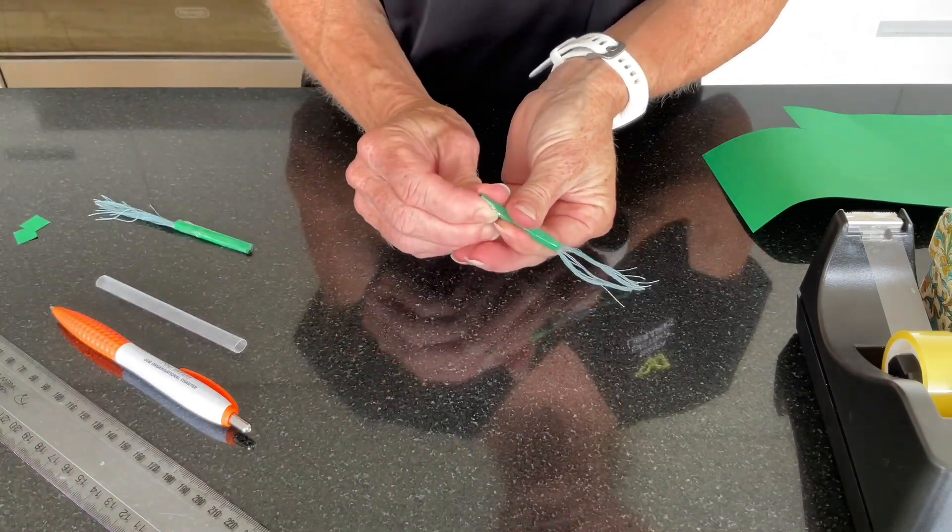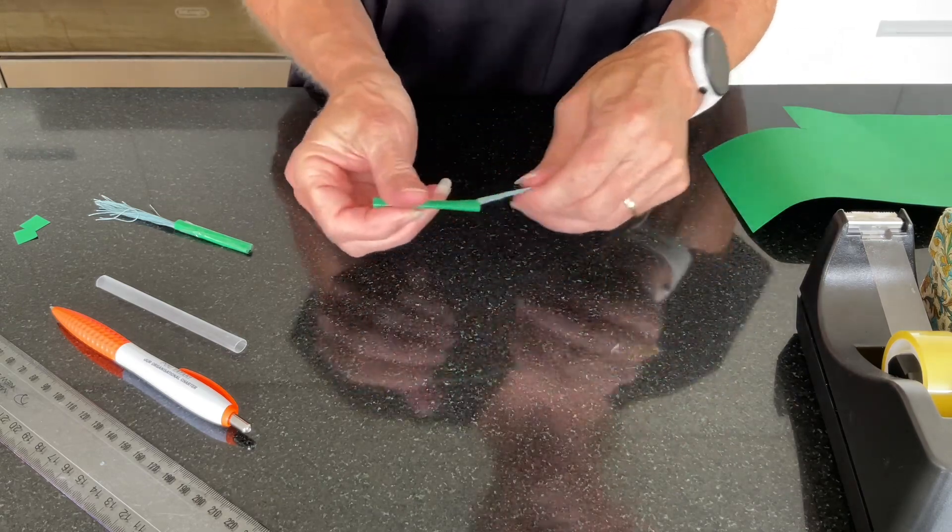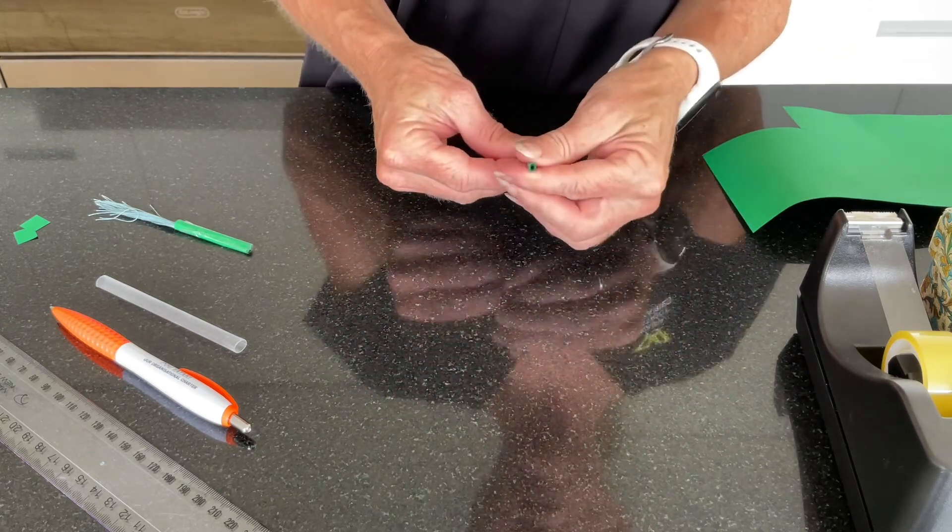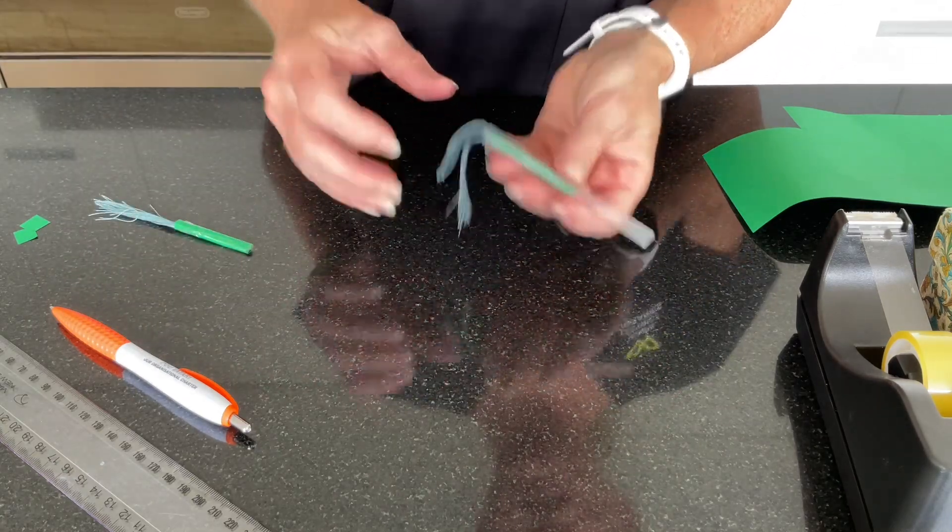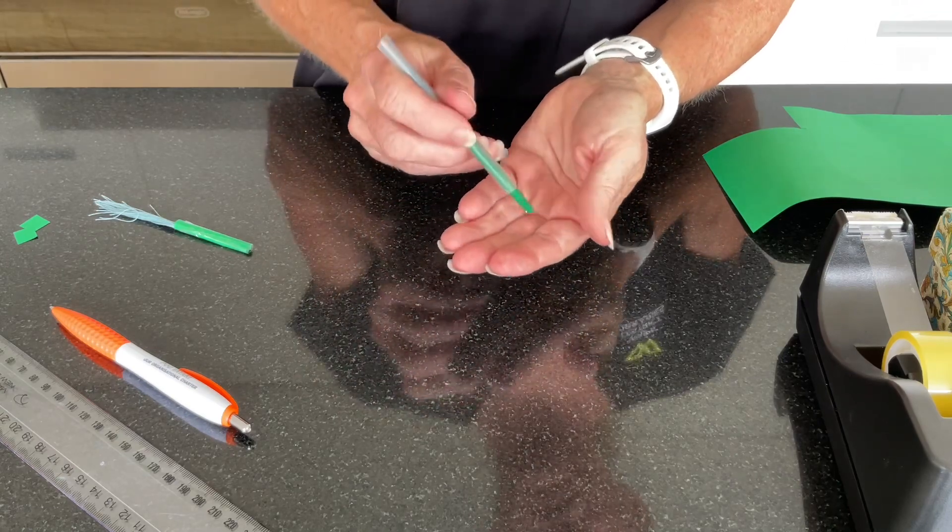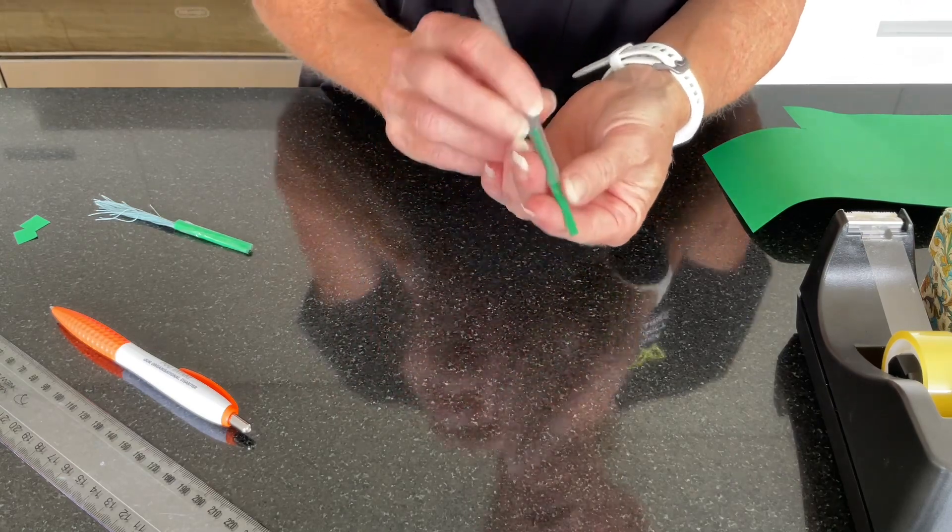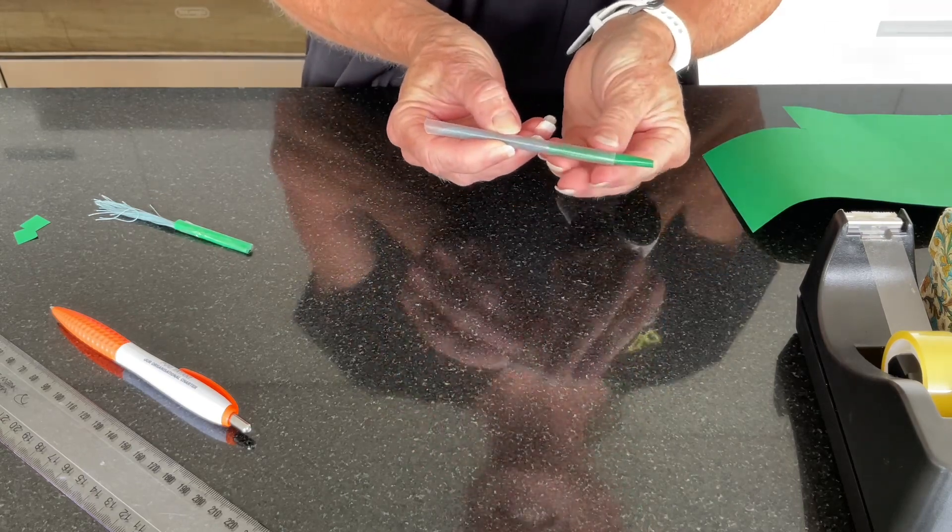You can make several of these paper darts and make them any combination of colours you wish. Then it's time to place them inside your tube and then blow through the other end to make them fly. Let's take a look.